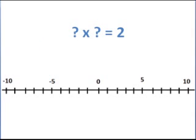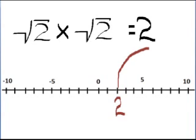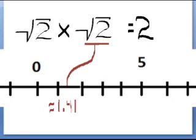What number times itself equals 2? If we tried 1 times 1, we'd get 1. And if we tried 2 times 2, we'd get 4. So the number times itself that gives us 2 is somewhere between 1 and 2. The square root of 2 times the square root of 2 is exactly 2. 2 lives right there on the number line. The square root of 2 happens to be correct to two decimal places at 1.41, but that's only to two correct decimal places, so the square root of 2 is approximately 1.41.